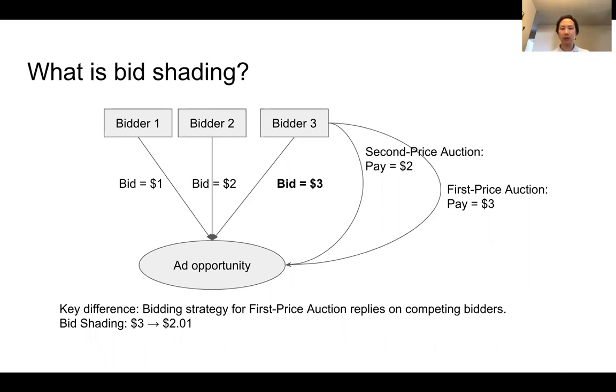For first price auction, a bidder needs to look at not only the value to themselves but also look at the value to the other bidders and reduce the bid price accordingly.